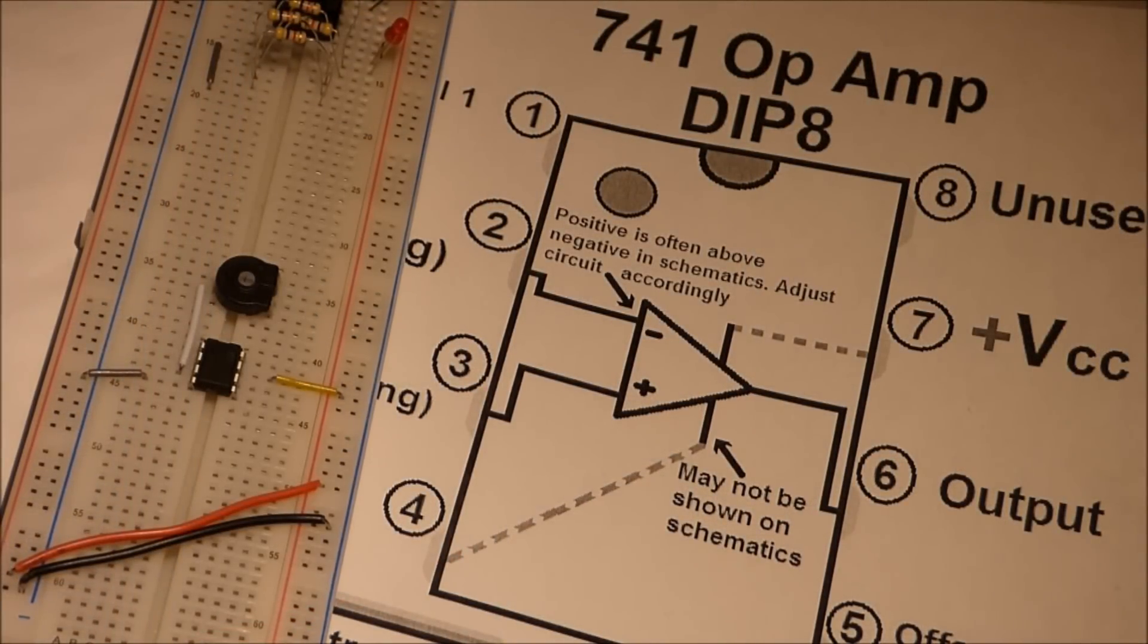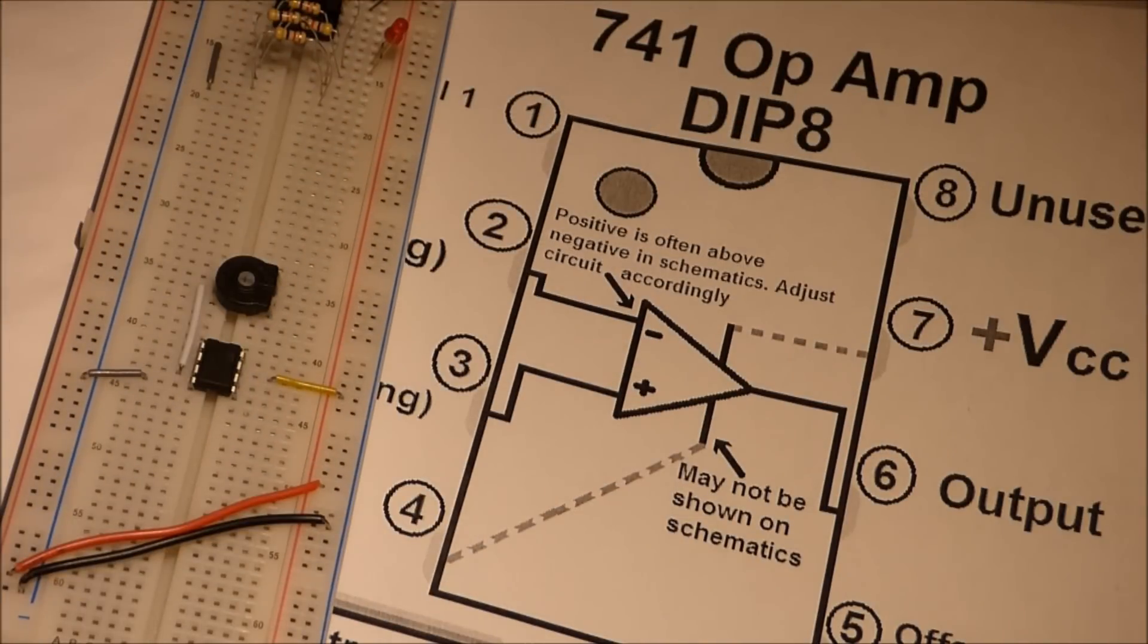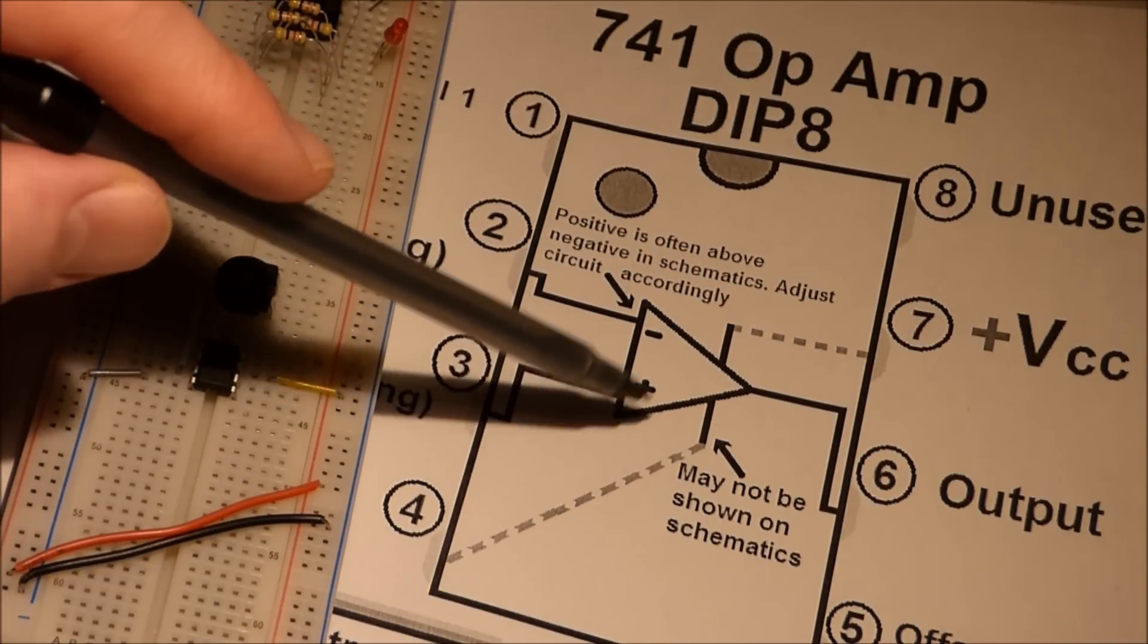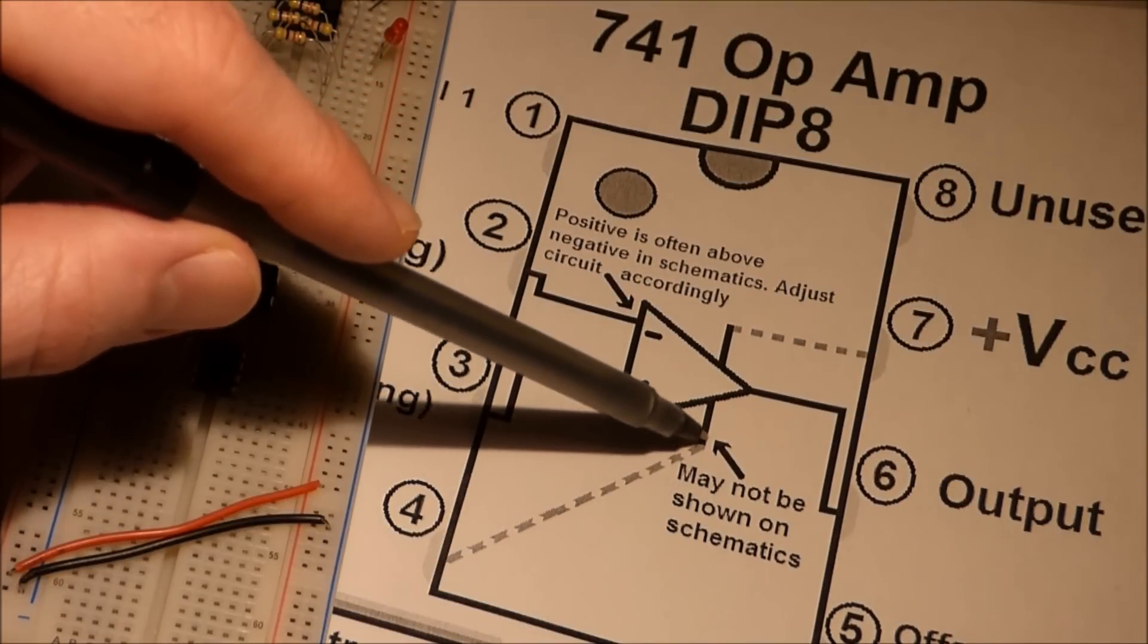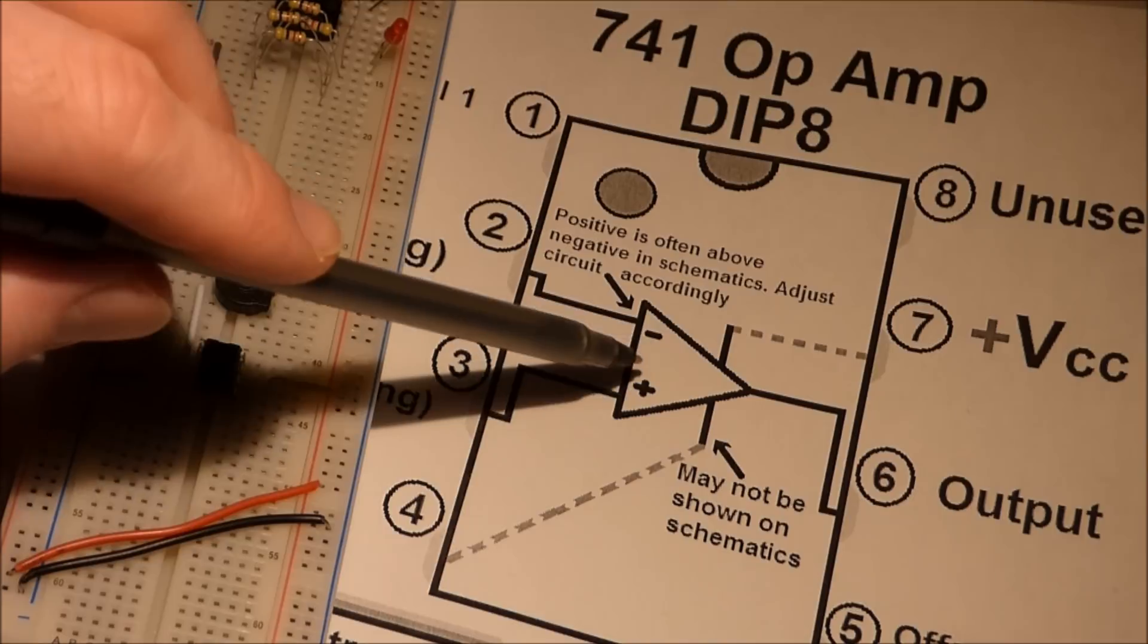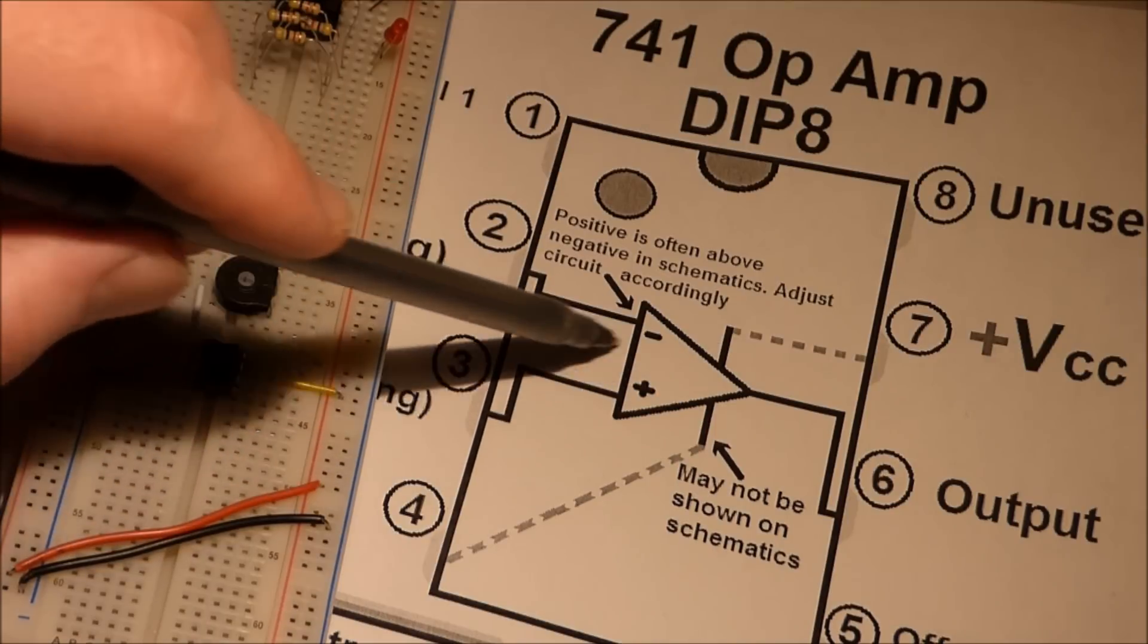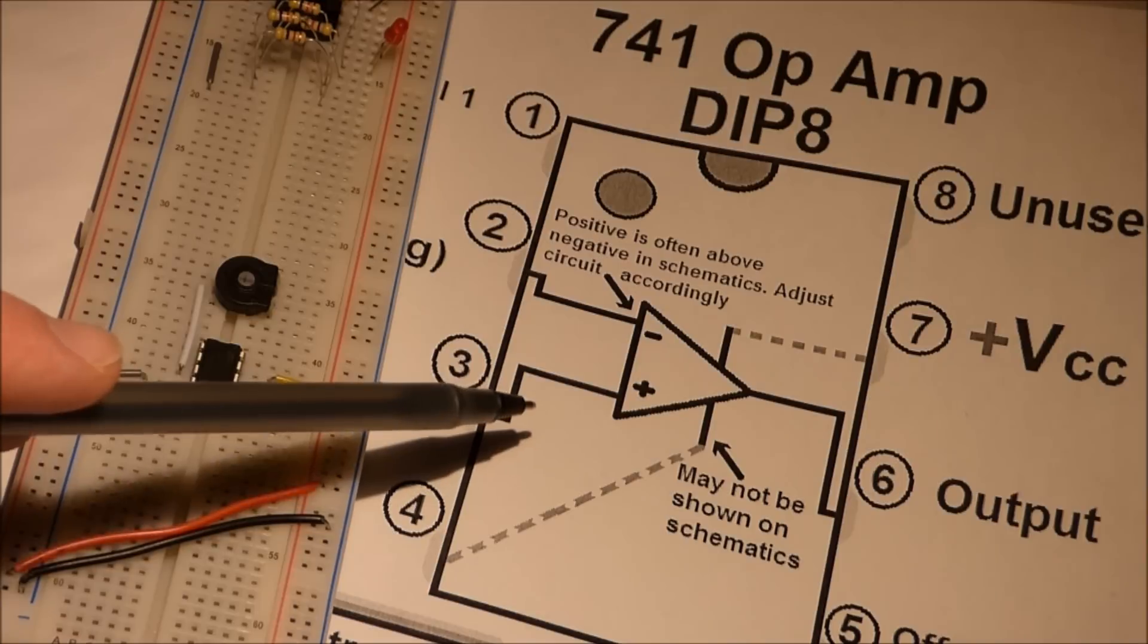This sheet I put together has the pin layout of the 741 op amp, but in the middle here I included how the schematic normally looks. These two lines are kind of optional. You may or may not see them on the schematic, but when it comes to schematics, op amps and comparators too, they're triangles and they usually have a plus and a minus on there.